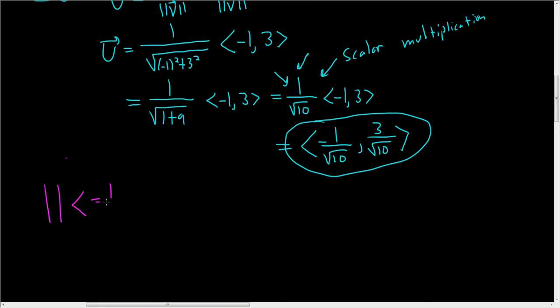And since this is supposed to be a unit vector, its norm or magnitude should be equal to 1. So we'll try it. So this is the square root.